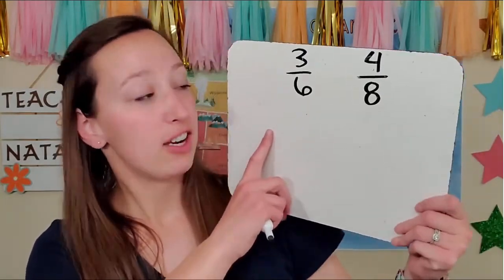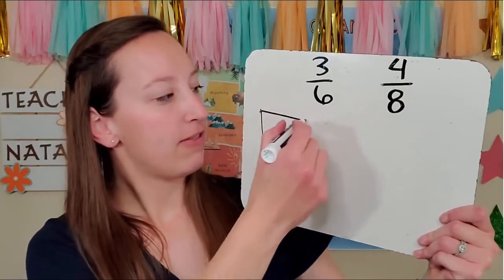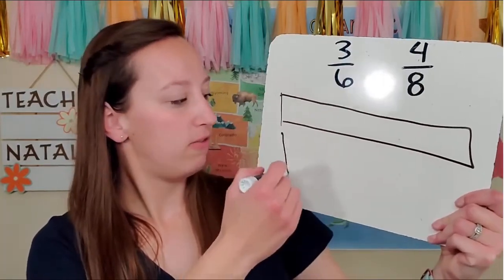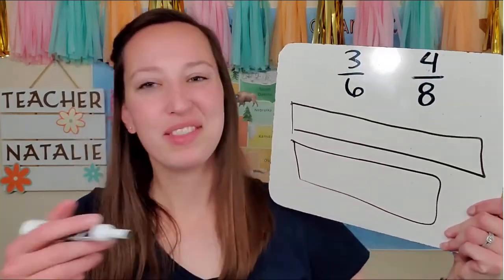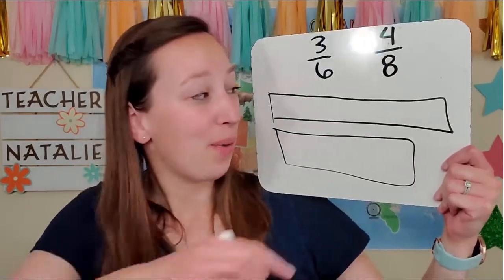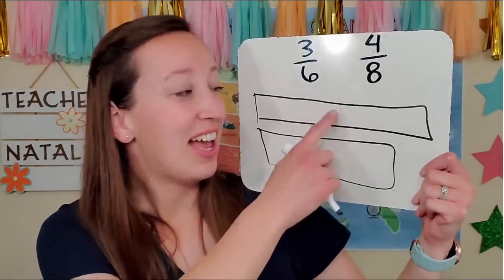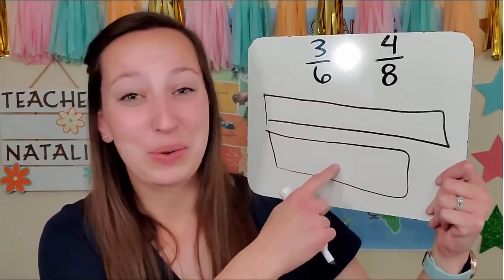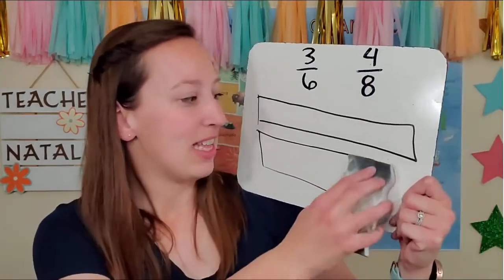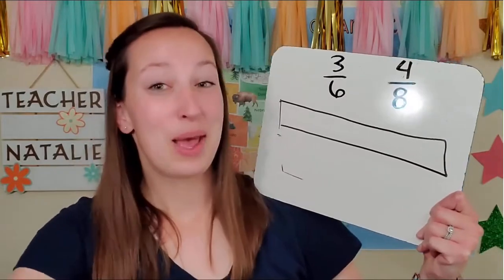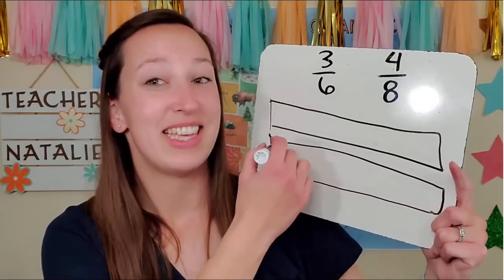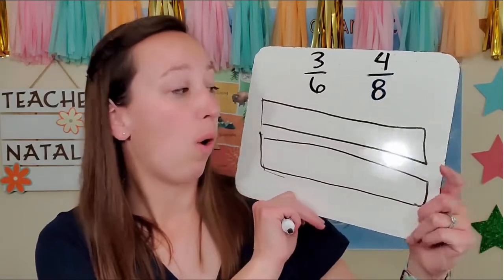Let's draw our fraction bar. Here's my first fraction bar. My second fraction bar — where's my second one? Are they the same whole? No, this one's longer. I can't compare these two — I'll get the wrong answer. Let me draw the second one again. We have to make it the same length, the same sized whole.